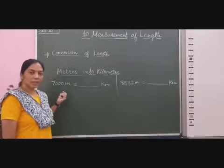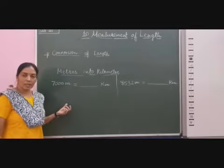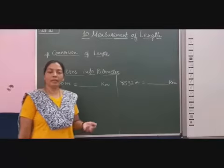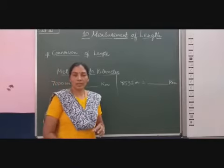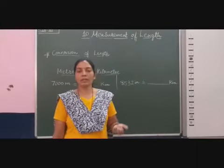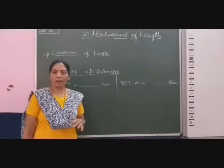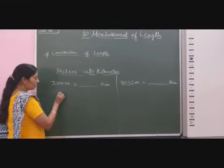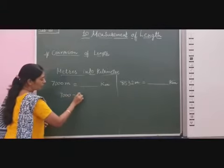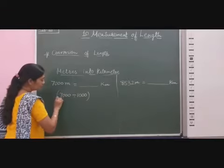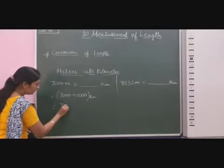In the question it is given: 7000 meters is equal to how many kilometers? Here we divide by 1000. When we convert meters into kilometers, we divide by 1000 — sorry, not 100, we divide by 1000. So, 7000 divided by 1000 equals 7 kilometers.